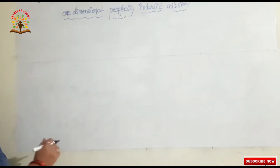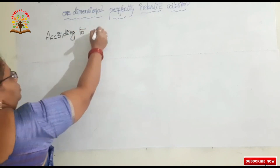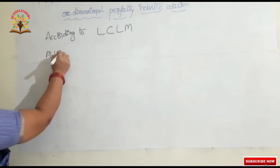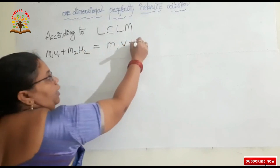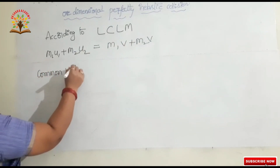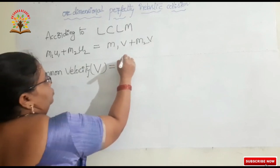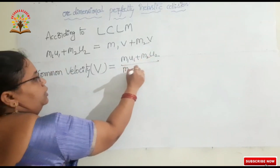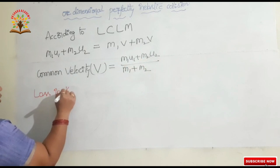According to the law of conservation of linear momentum: M1·U1 + M2·U2 = M1·V + M2·V. Here the two bodies are moving in the same direction. The common velocity V is equal to (M1·U1 + M2·U2) / (M1 + M2).